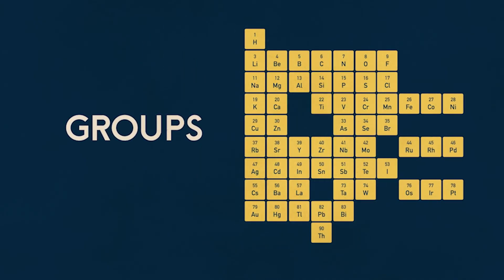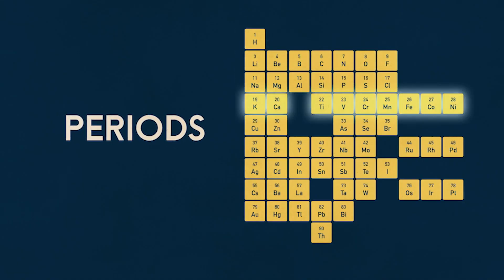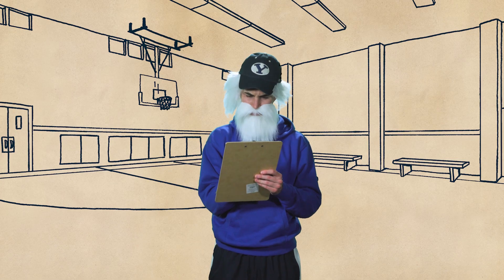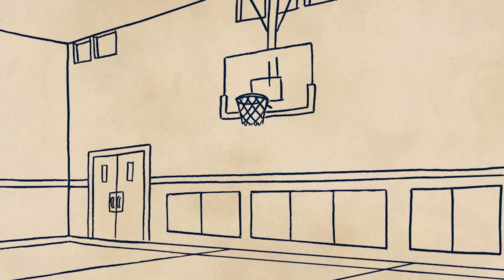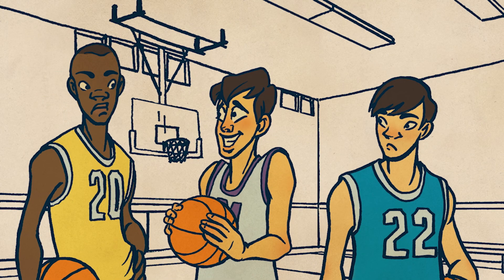Each group has elements that are similar. He also found that the groups could be lined up so that the masses of their respective elements increased from left to right. The rows this created are called periods. But there were some empty gaps in Mendeleev's table, so he did some calculations and predicted the discovery of those missing elements, along with the characteristics they'd have.